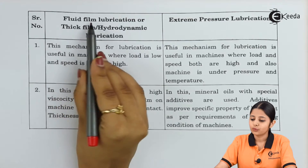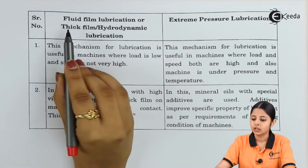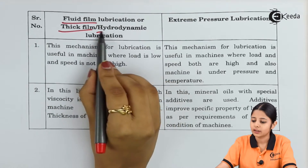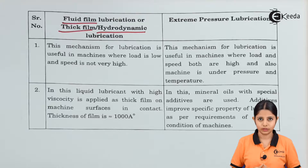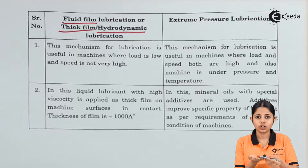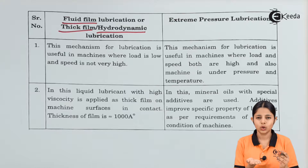The first one is fluid film lubrication, also known as thick film or hydrodynamic lubrication — it has three names. In the fluid film mechanism, we have a machine part moving against another machine part. Because friction is generated at the surface, we put a film of a lubricating layer between them. This film is known as the fluid film or thick film.